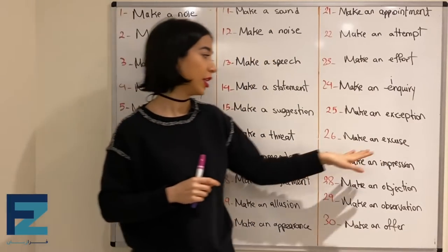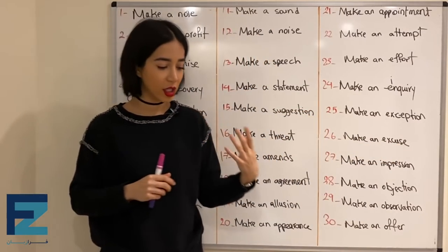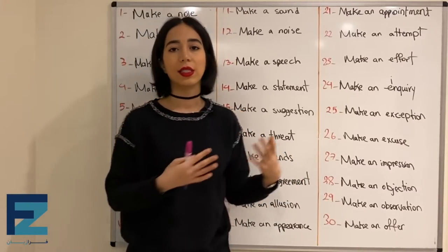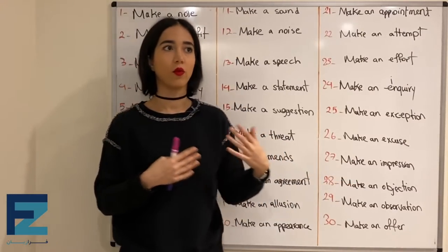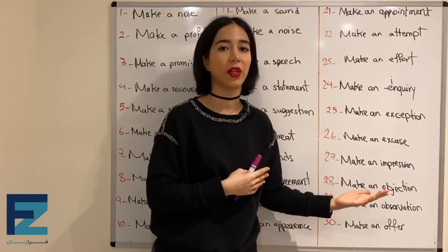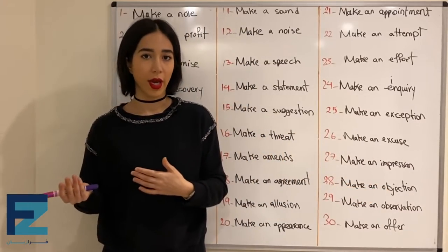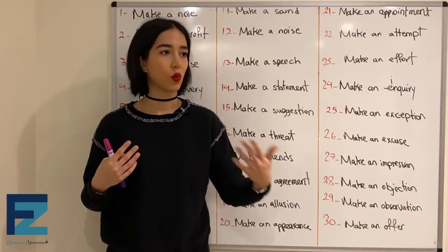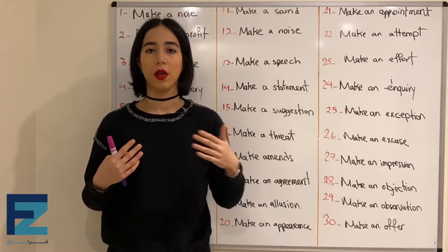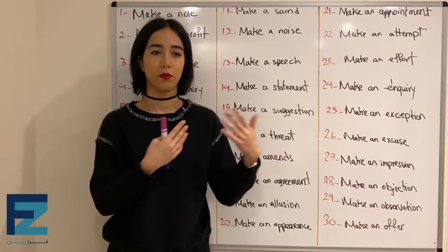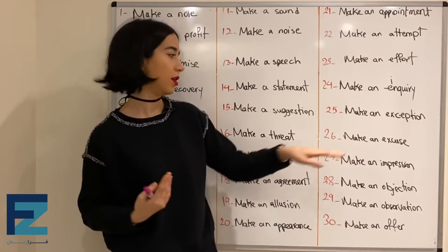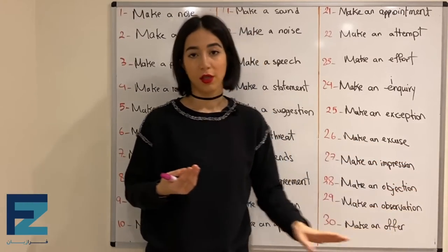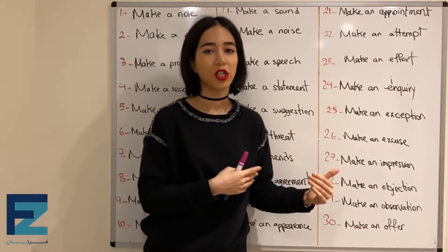Number twenty-six: make an excuse — means to say why you did something, or to bring reasons why you did something. دلیل آوردن که چرا یک کار رو کردی.